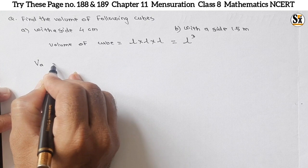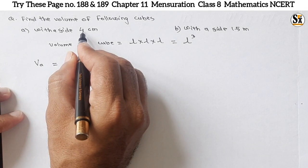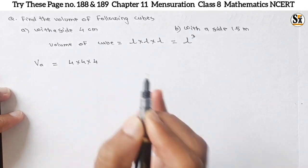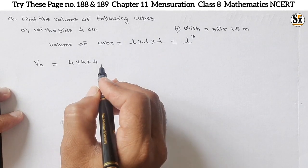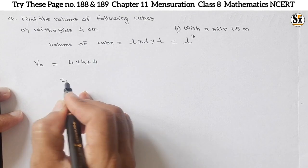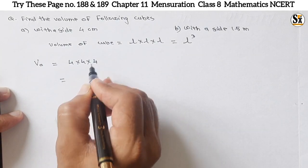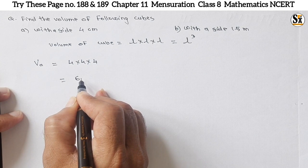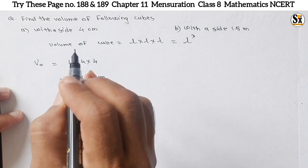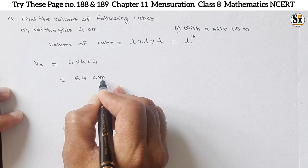For the first example, Vₐ: l is given as 4 centimeters, so 4 × 4 × 4 = 4³. We know 4 × 4 = 16, and 16 × 4 = 64. So the volume of the first cube is 64 centimeter cube.